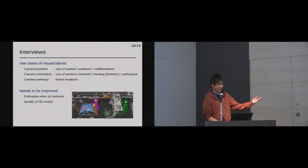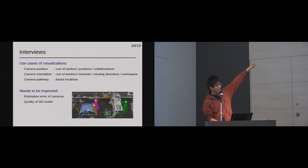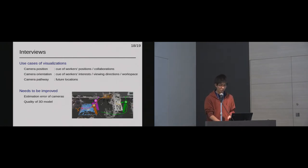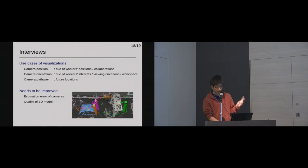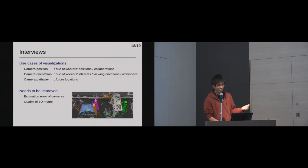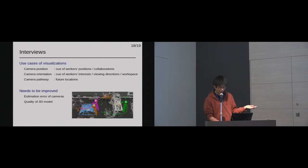We also report a brief summary of the interviews. As for the use cases of 3D visualization: camera position was used as a cue for finding workers' position and collaboration; camera orientation was used for finding workers' interests, viewing directions, and working space; and camera pathways were used for finding the future location of a worker. On the other hand, we also received negative feedback about the interface, such as estimation errors of camera positions or low quality of the 3D model. These limitations should be improved in our future work.